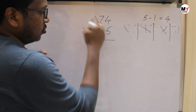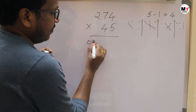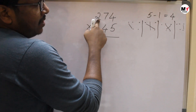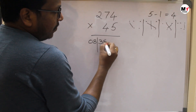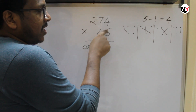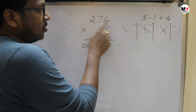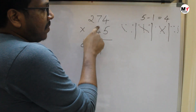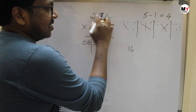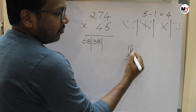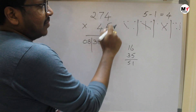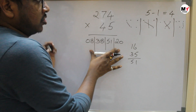First with first: 4 times 2 is 8. Always double digit — 08. Then four sevens are 28 and five twos are 10. 28 plus 10 is 38. Now the third step — first with last: 4 times 4 is 16, and five sevens are 35. 16 plus 35 is 51. Then multiplying with the last digit: five fours are 20. We got four steps total.